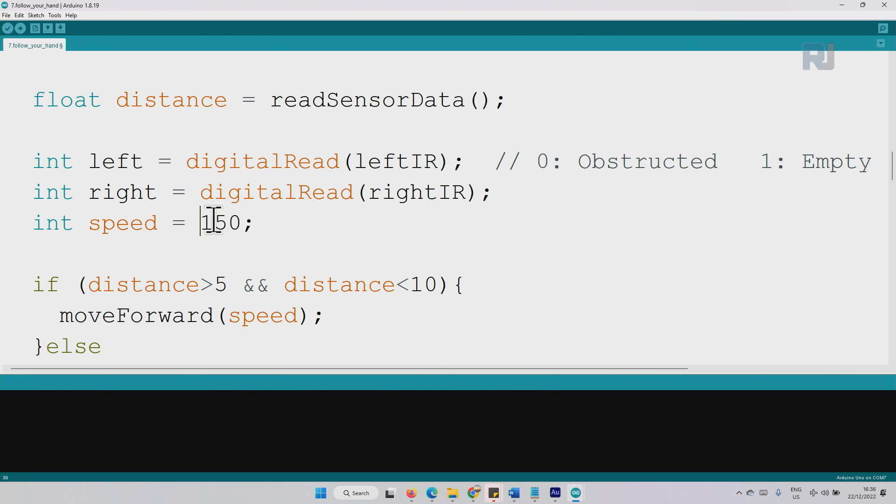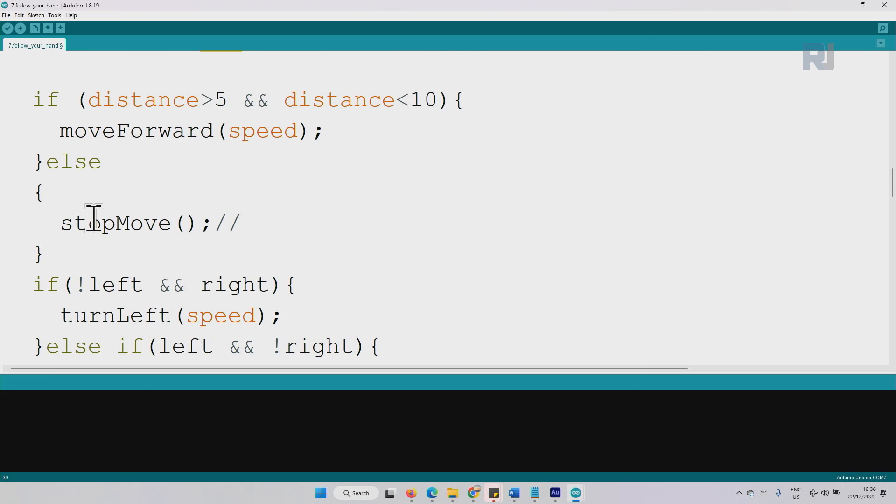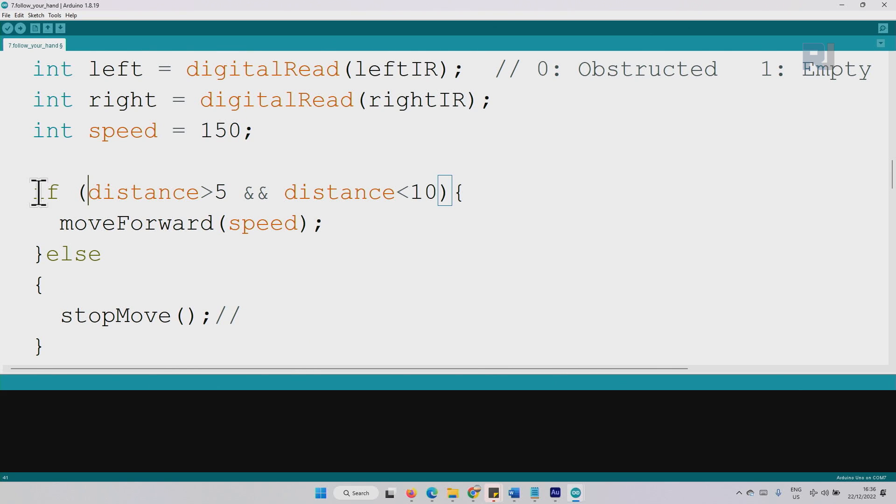This is the speed we have defined. Here I have changed the code because the code had some issue. This portion is exactly the same: we check if the distance is greater than 5 and less than 10, which means between 5 and 10, then we move forward with this speed, passing it to this function which you have seen in the speed or controlling the car lesson. Then we say else stop, which means if it's not between 5 and 10 centimeters, stop.